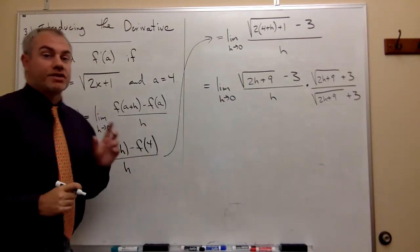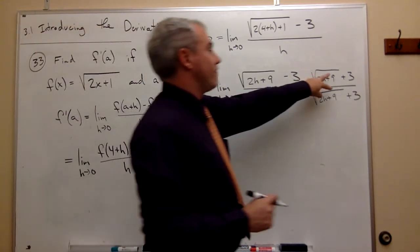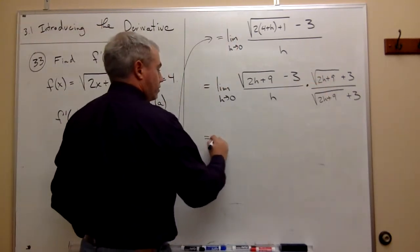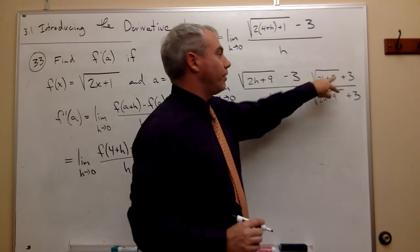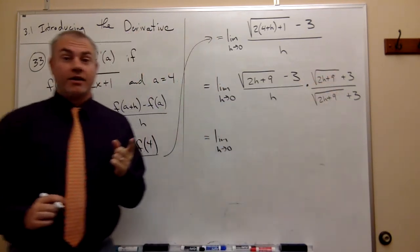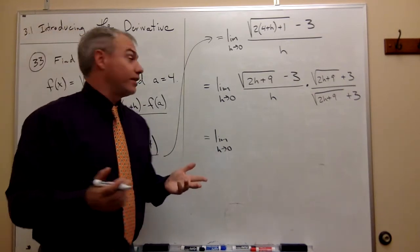Okay, if we multiply the top and the bottom by this value, let's see what comes out. Notice I didn't do anything but multiply this by the number 1 and that's perfectly legal to do.